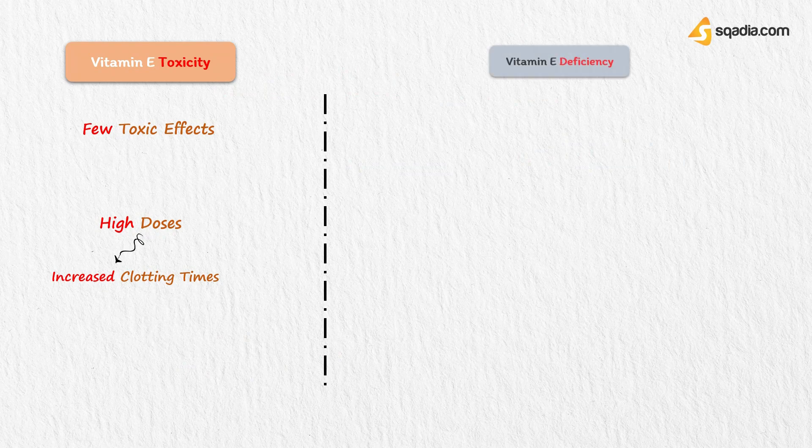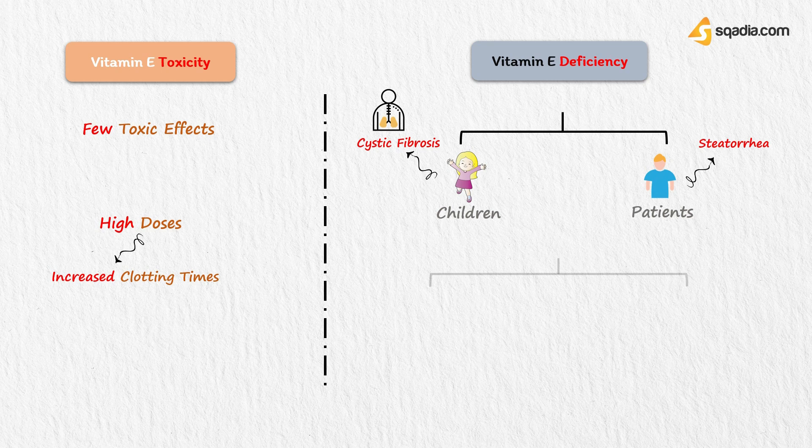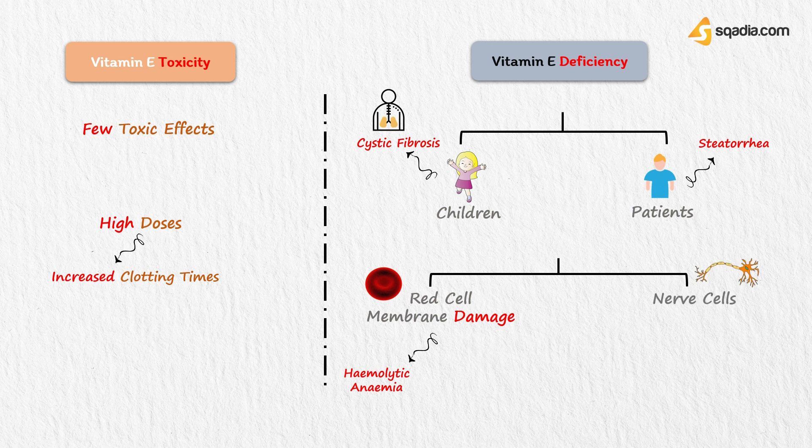Let's discuss the diseases caused by vitamin E deficiency. Deficiency of vitamin E occurs in children with cystic fibrosis and patients with steatorrhea. Red cell membrane damage results in hemolytic anemia and damage to nerve cells causes peripheral neuropathy.